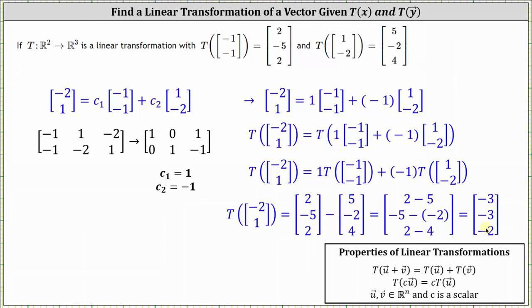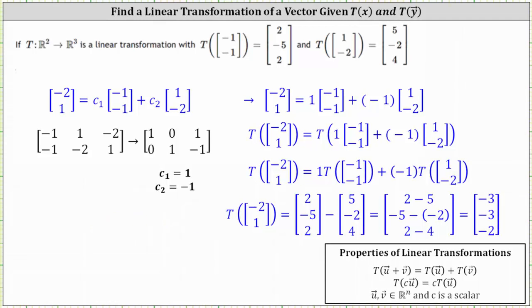We now know the transformation of the vector (-2, 1) is (-3, -3, -2), which is what we were trying to find. I hope you found this helpful.